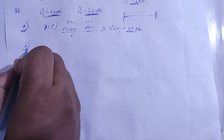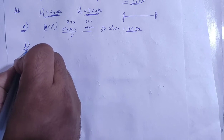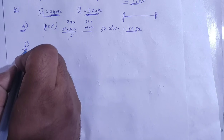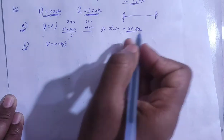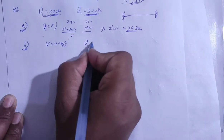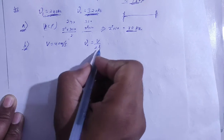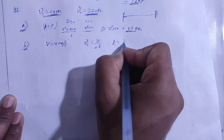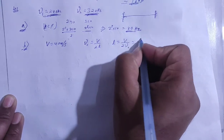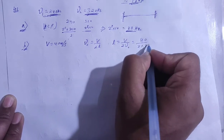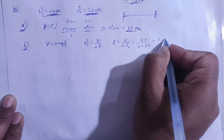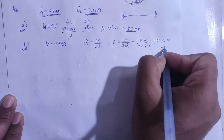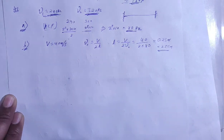For part B: if the transverse wave travels on the string at a speed of 40 meter per second, what is its length? The fundamental frequency equals v divided by 2L, so L = v divided by 2 times fundamental frequency. With v = 40 and fundamental frequency = 80 hertz, L = 40 divided by 160 = 0.25 meter, which is 25 centimeters.